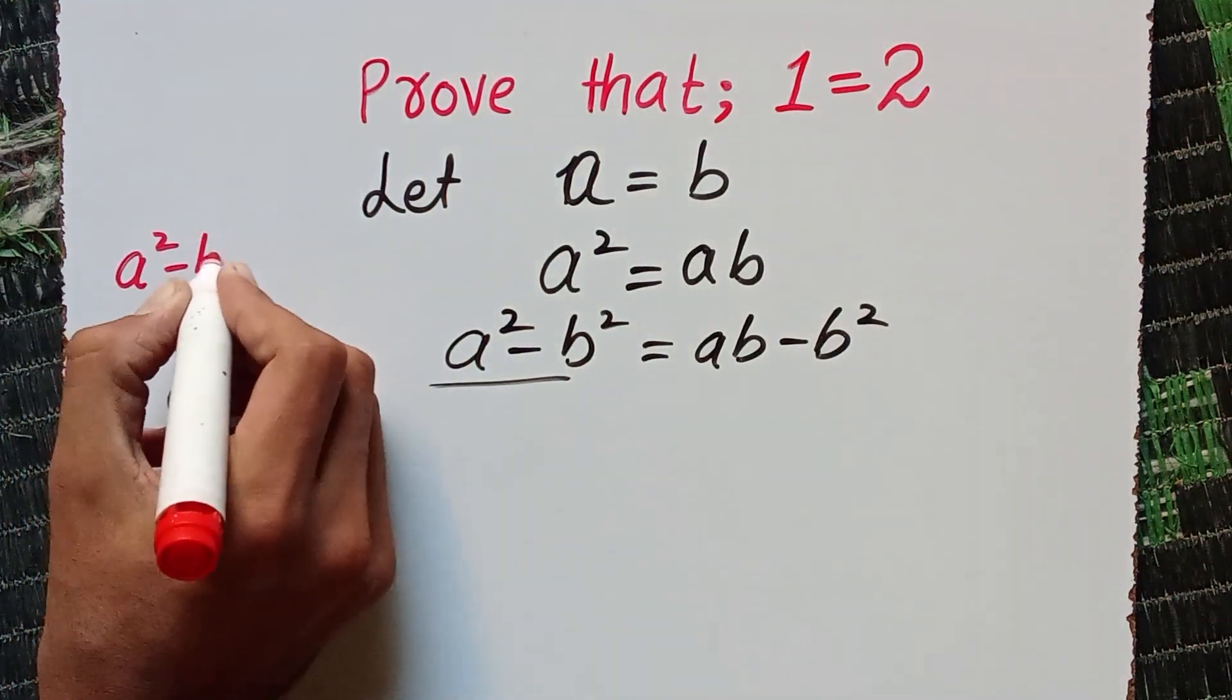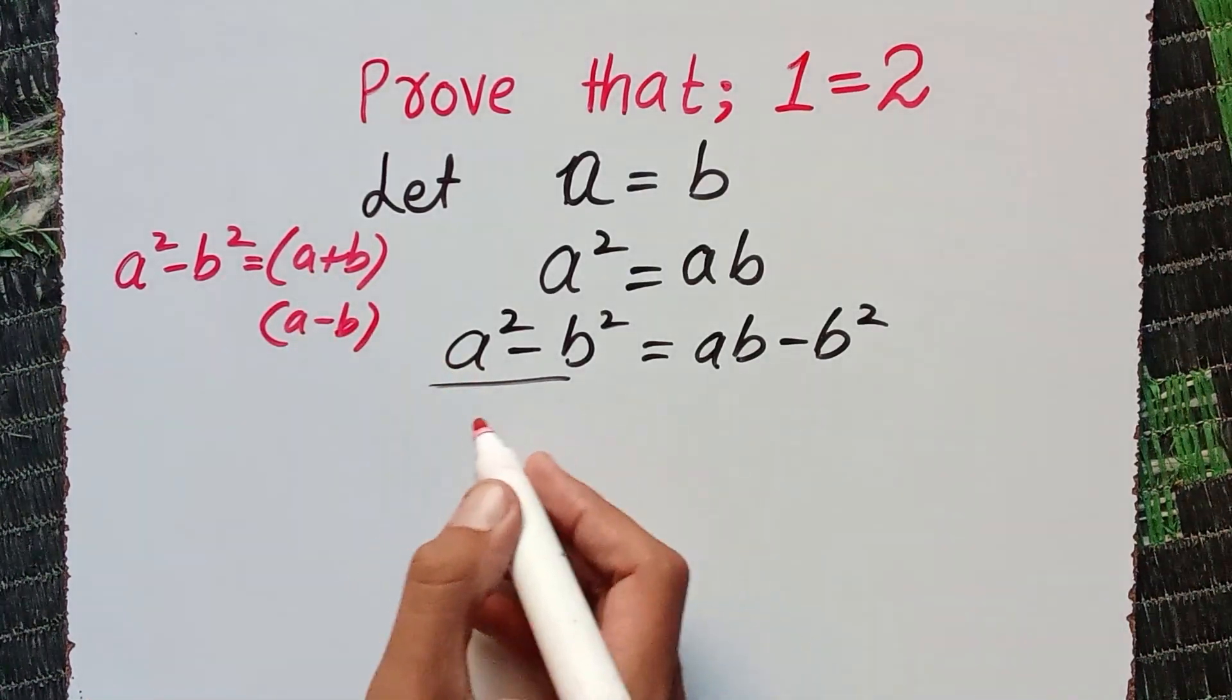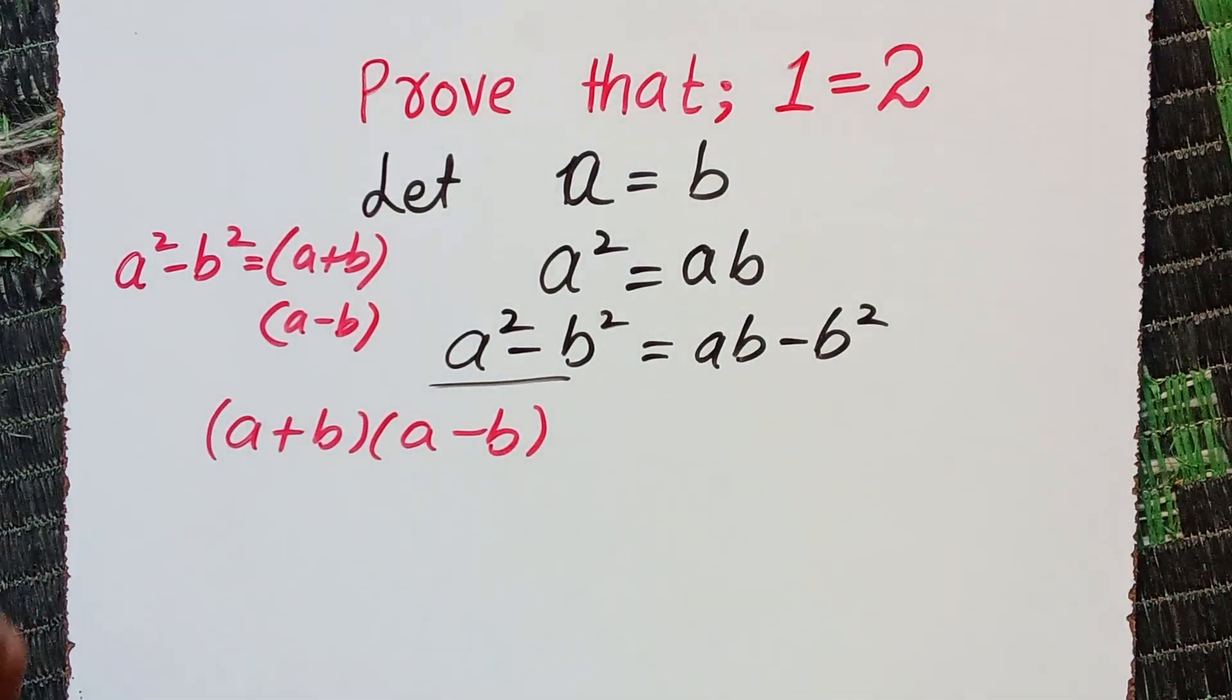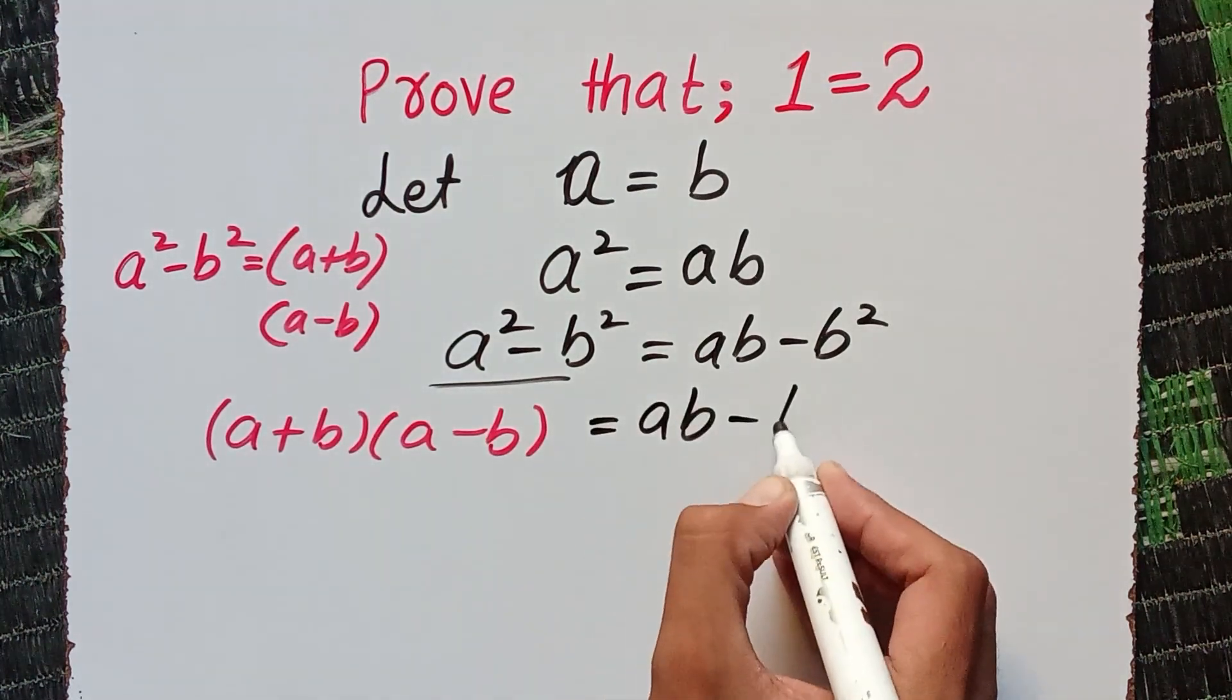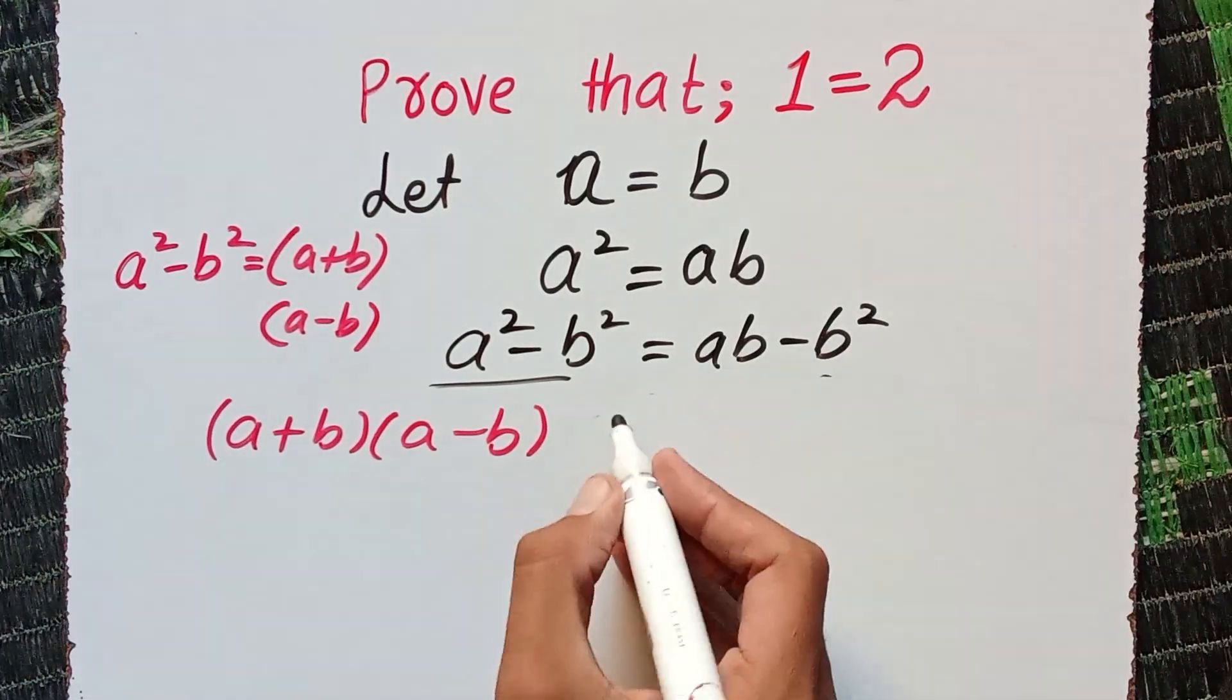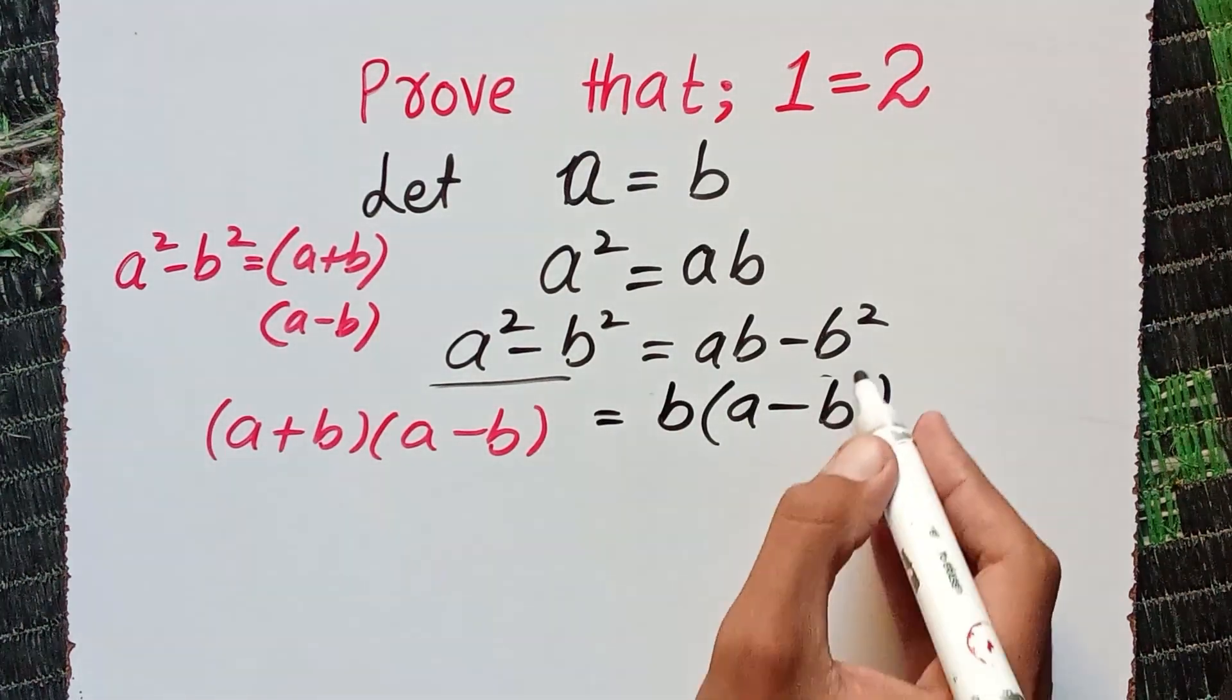So we can write here (a plus b)(a minus b). On the right side we have a b minus b squared. From here I can take common b, so it becomes b(a minus b).